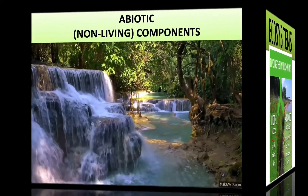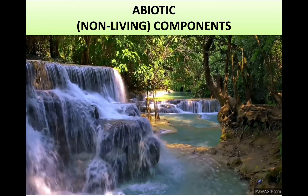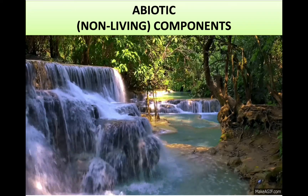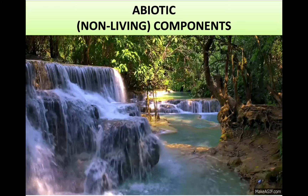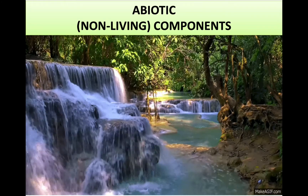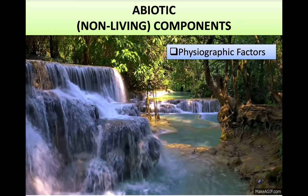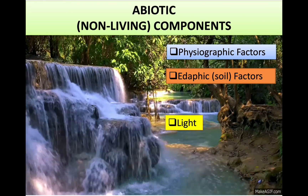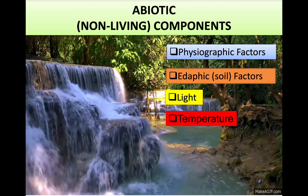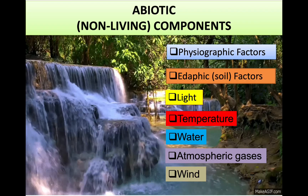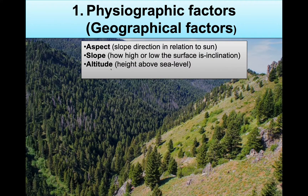Our first focus would be on abiotic, which are the non-living components in an ecosystem. There will be seven important abiotic components that we will be learning about during these videos: physiographic factors, edaphic — which are the soil factors — light, temperature, water, atmospheric gases, and wind.